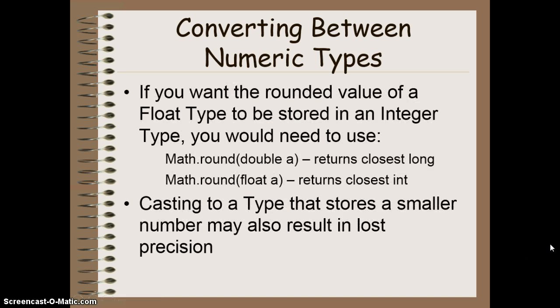If you want the rounded value of a float type, you have to actually use data that's stored in the math class. So math.round, if you provide it with a double, it will return the closest or the rounded long value. And if you give it a float, it will give you an int value.